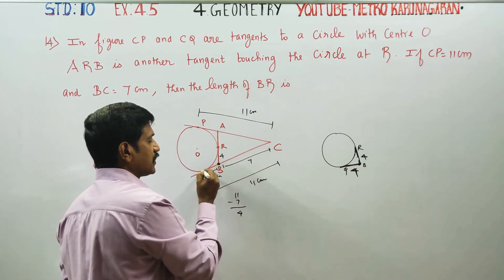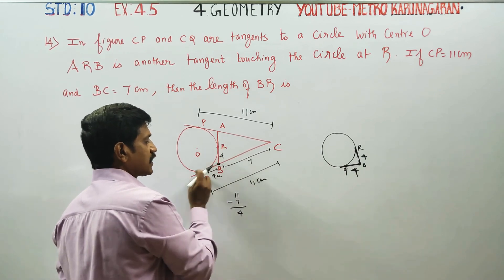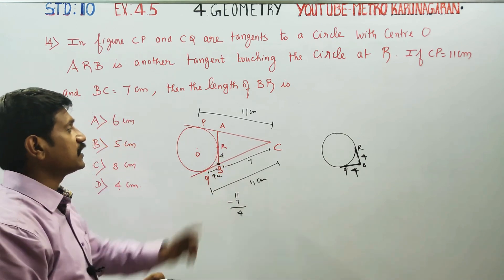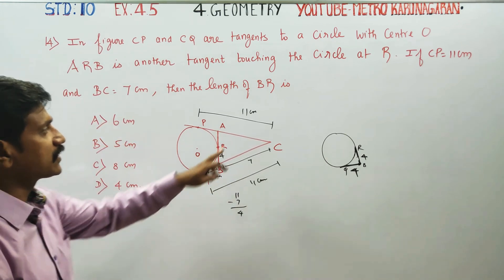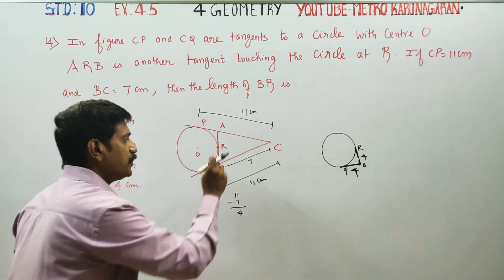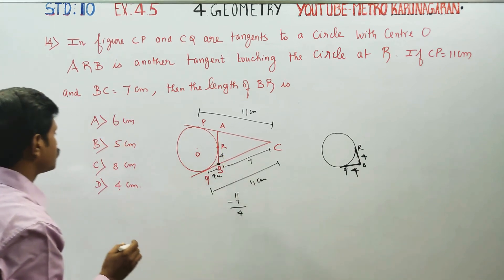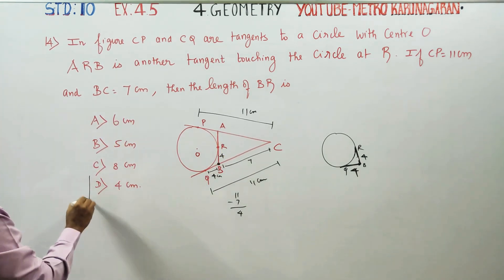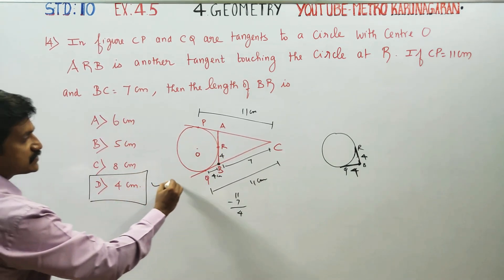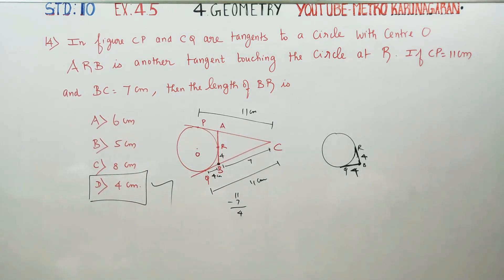This is one tangent and this is one tangent from the circle — that is two tangents. This is 4 and this is 4. What is the value of BR? BR answer is 4. Therefore, your best option will be D. Thank you.